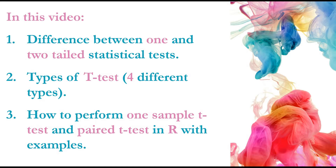The t-test is a very simple statistical test and it has only four different types, but these different types are also known by so many different names, which makes it confusing. In this video, we will first learn the difference between one and two tail statistical tests, discuss the different types of t-test, and learn how to perform one sample t-test and paired t-test in R with examples.